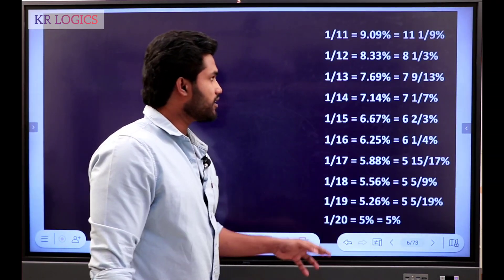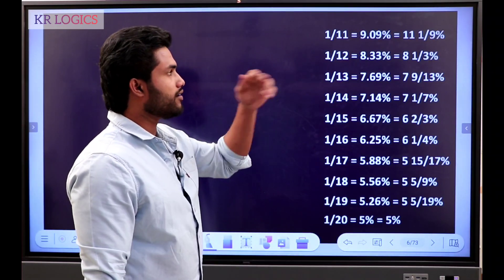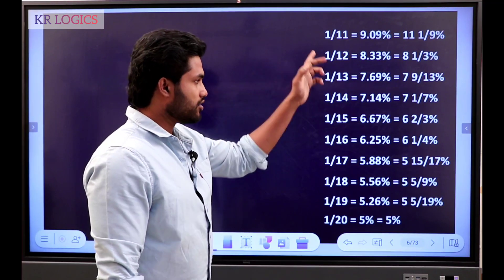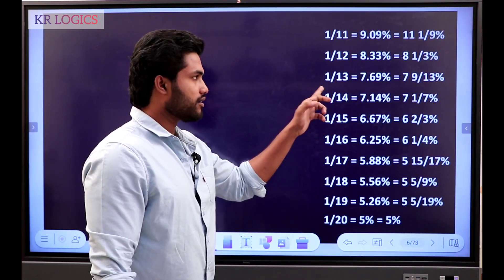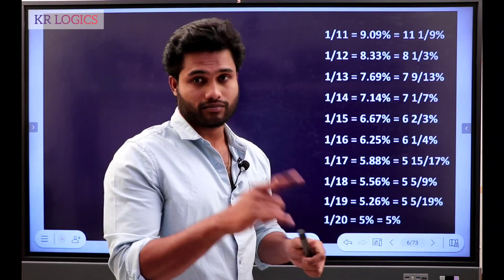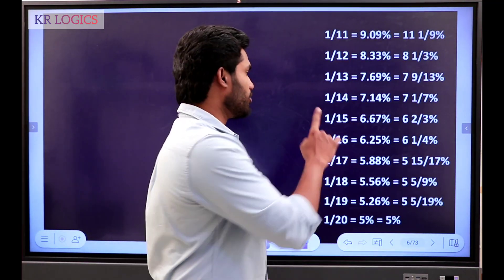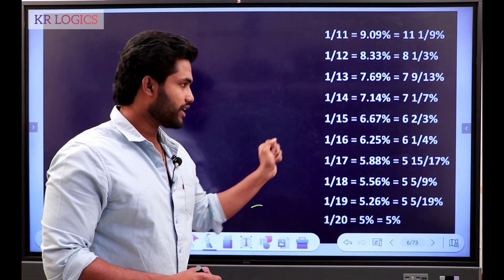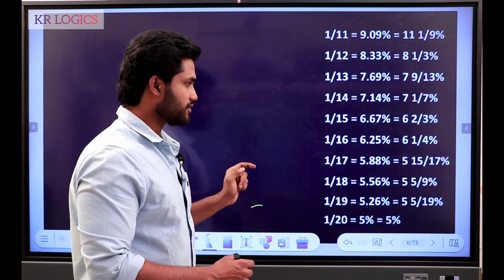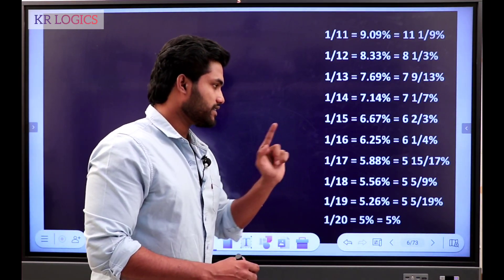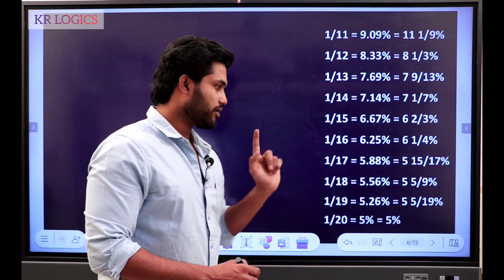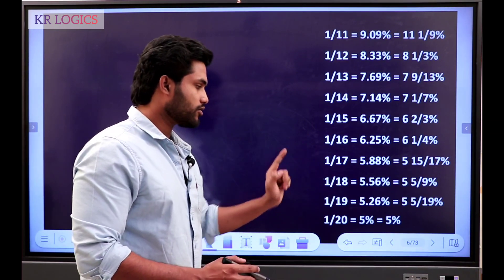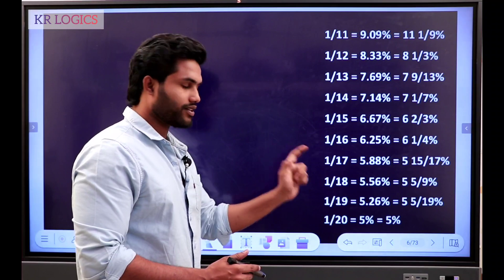1 by 11 is 9.09. 1 by 12 is 8.33. 1 by 13 is 7.69. 1 by 14 is 7.14. 1 by 15 is 6.67. 1 by 16 is 6.25. 1 by 17 is 5.88. 1 by 18 is 5.56. 1 by 19 is 5.26. 1 by 25%.